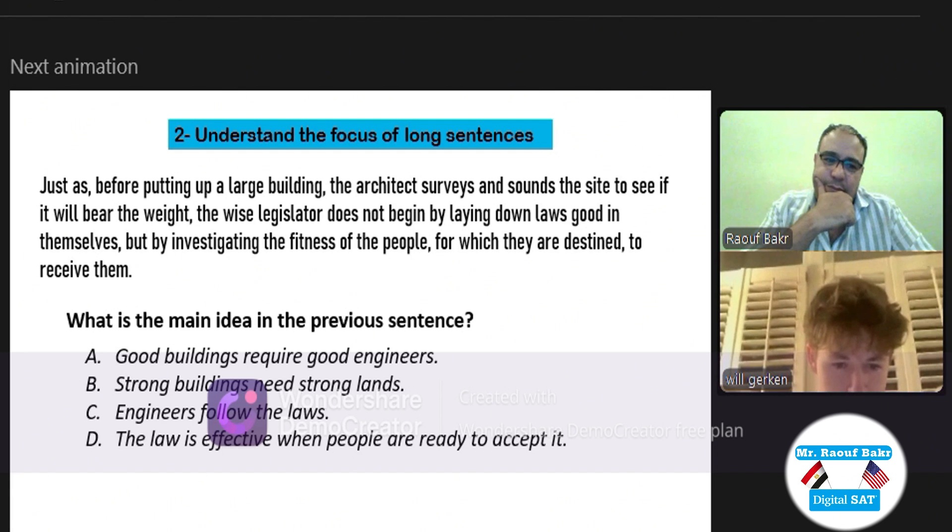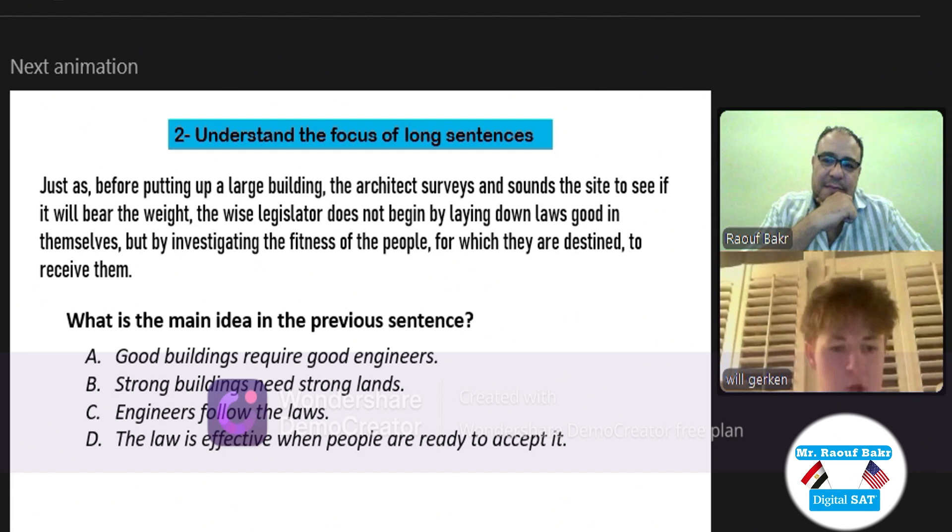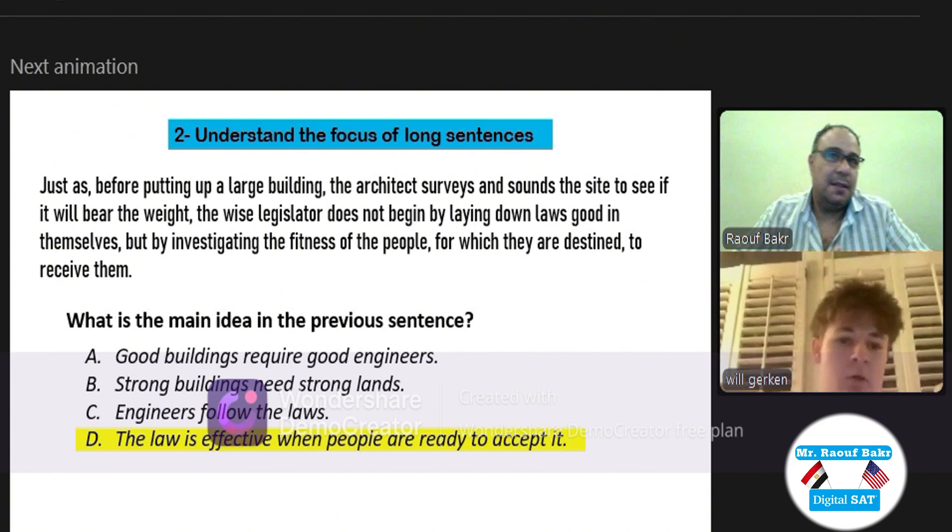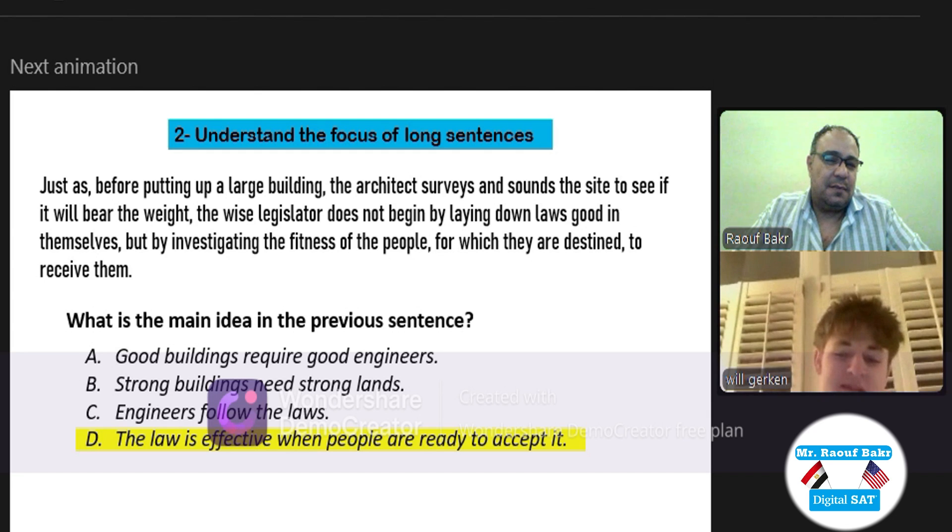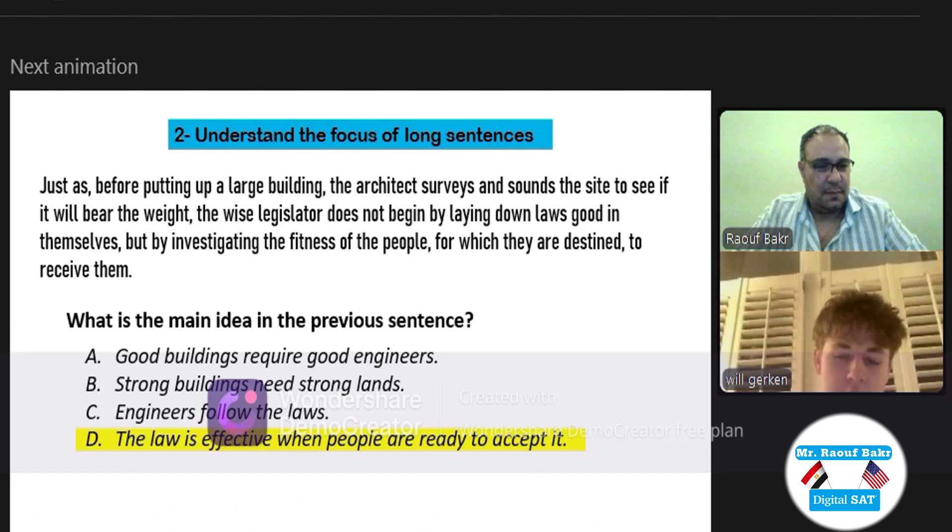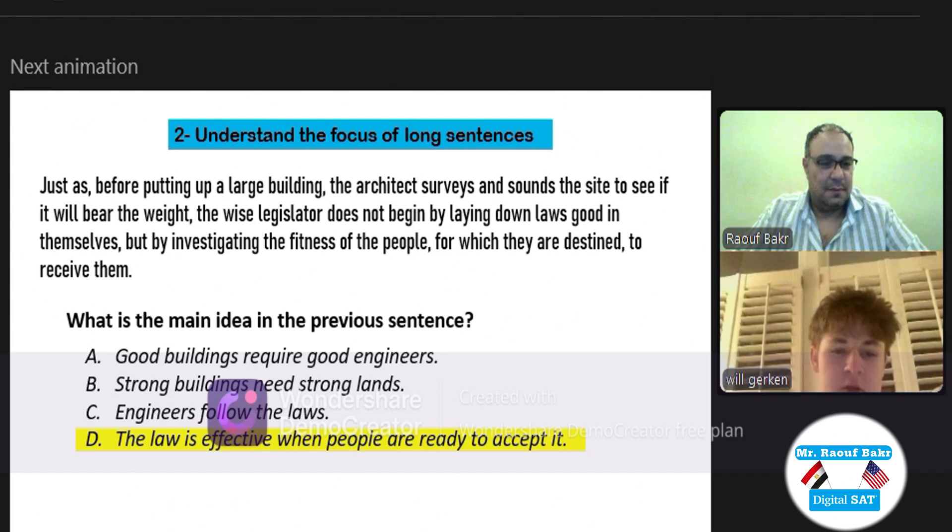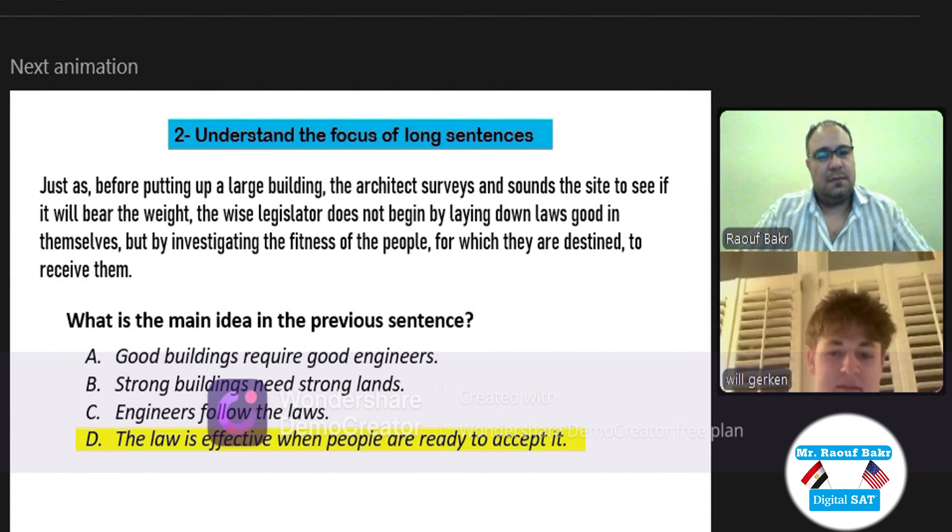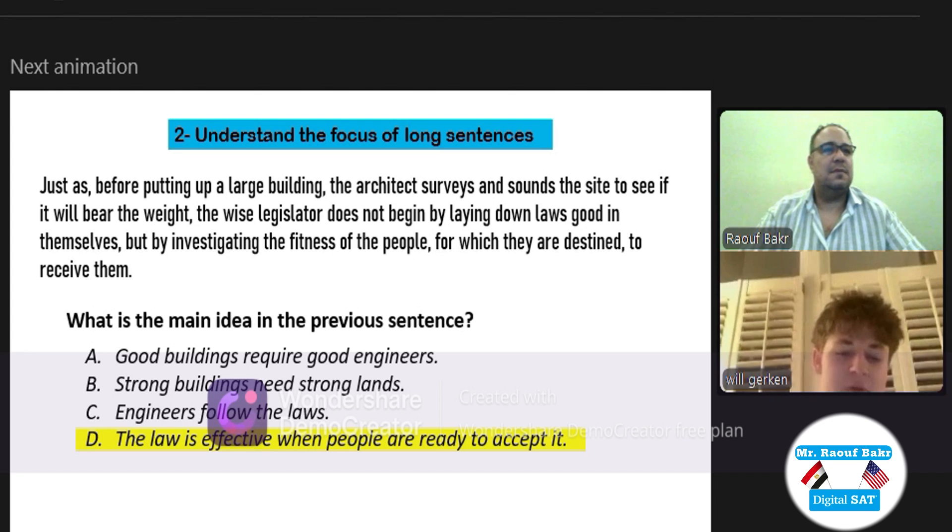Okay, I'm thinking... I would say D. It is D, very good. But can you explain to me please what makes it D? So it kind of gives an example about how the architect looks at the site before actually putting any buildings down, and it kind of talks about how a legislator doesn't start by laying down good laws—he has to go into depth, see if people will accept them or not.